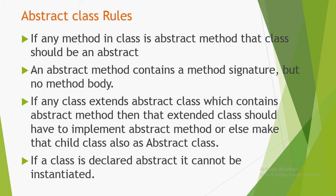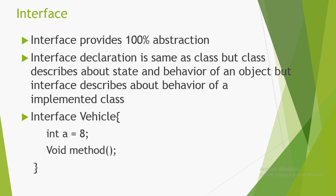Or else, make that child class also abstract. We already saw that if we didn't implement those abstract methods in the child class, we should make it abstract. If a class is declared abstract, it cannot be instantiated, because abstract methods will be available with no implementation — the Java compiler won't allow creating an object for abstract classes. Object creation is nothing but instantiation of that class.